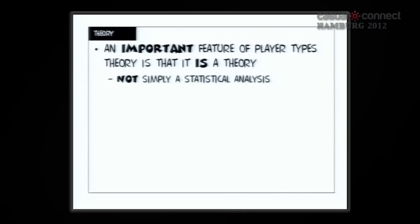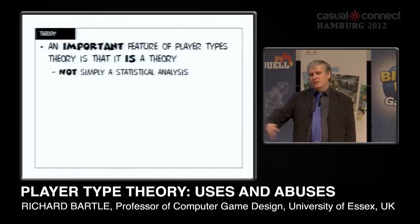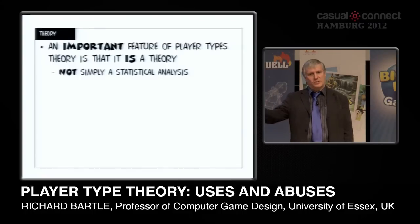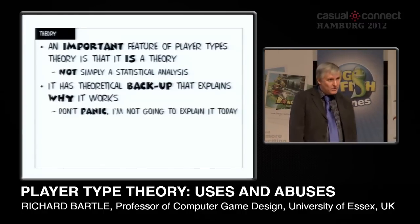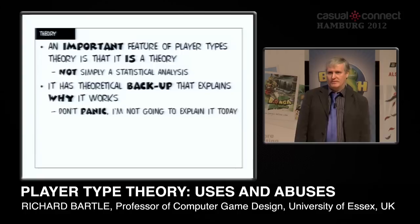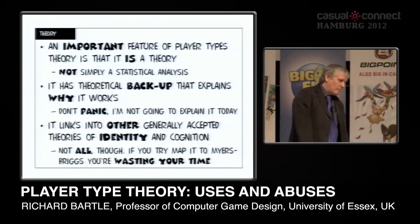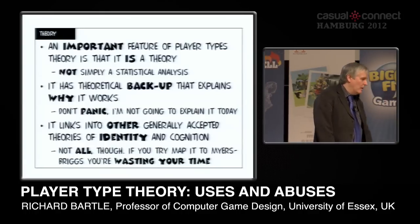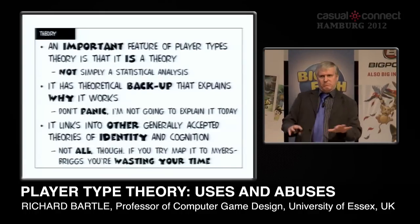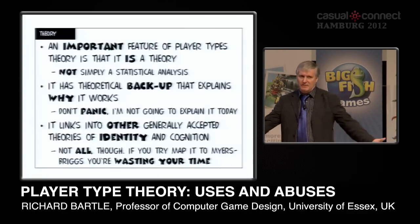An important thing about player types is that it's a theory, not just a statistical analysis. It's not like you just asked a bunch of people what they thought, got the results, and said there are four types. There is actually a theory underneath it that explains it all. It does link to other generally accepted theories to do with identity and cognition, so you can have some confidence that it's not just made up — it does actually have some basis in psychology.